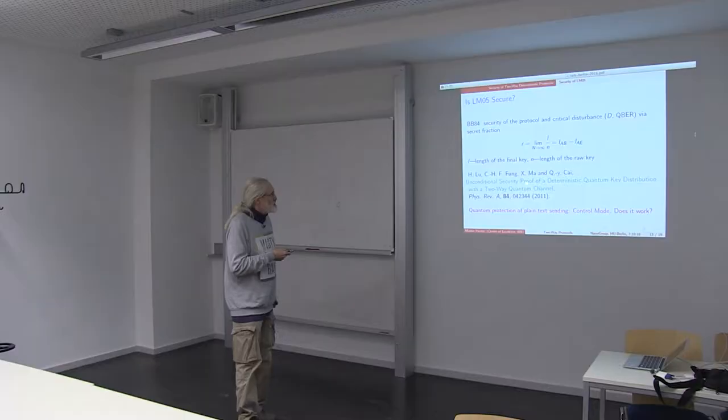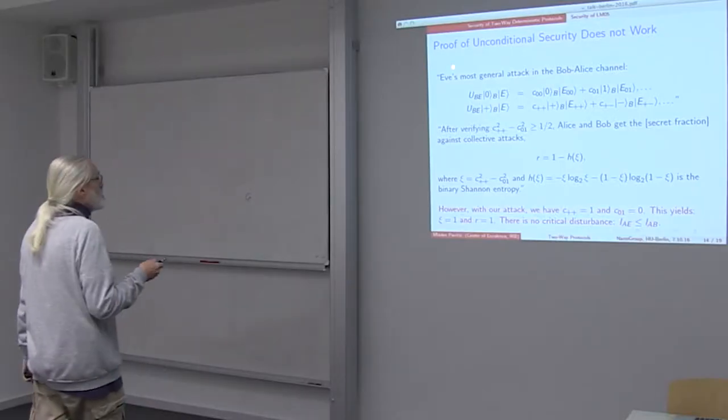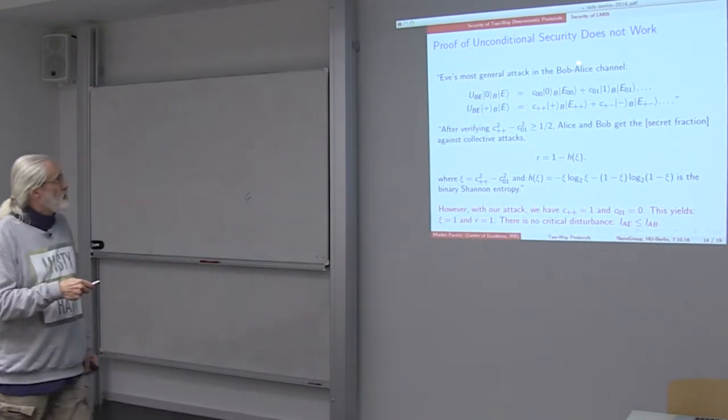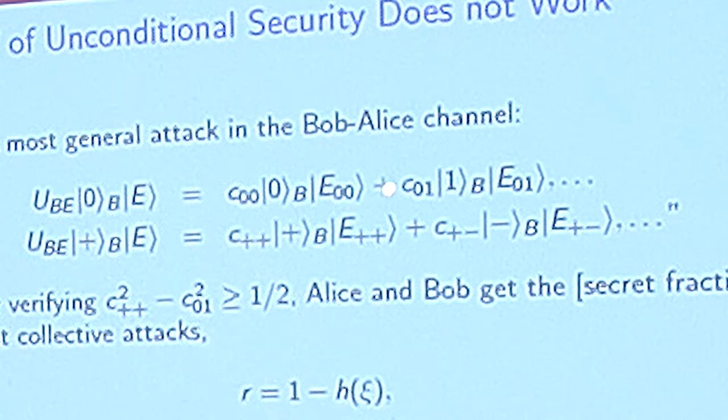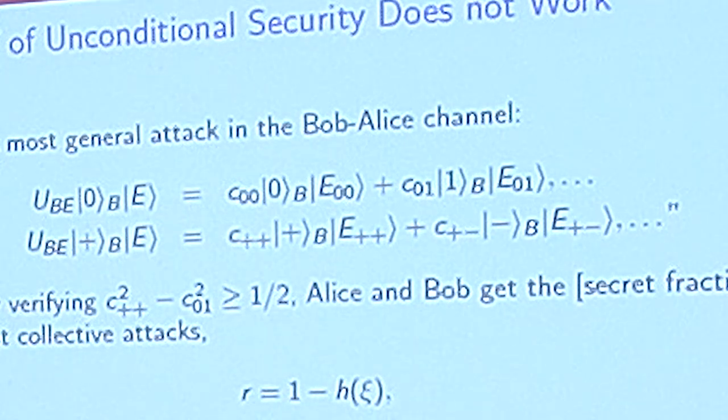They start with the universal unitary operator describing Eve's gain during her tapping of the channel in both directions. They call it the most general attack, and they start with the Bob-Alice channel. And here we can see the terms that correspond to spin flips in the message mode, which we don't have.